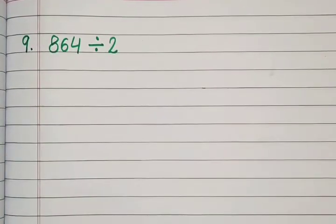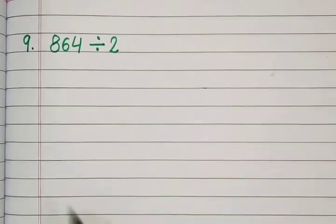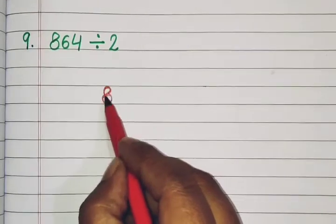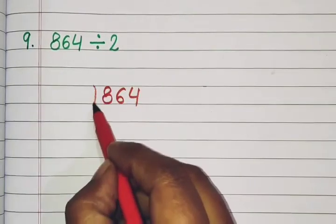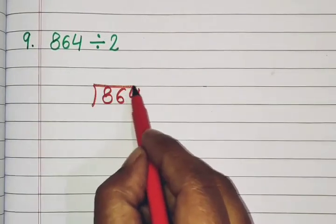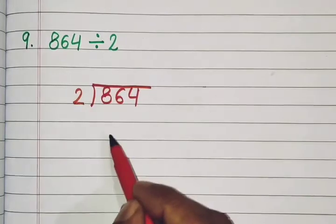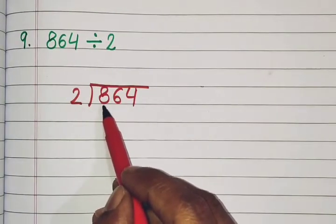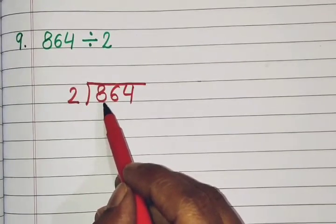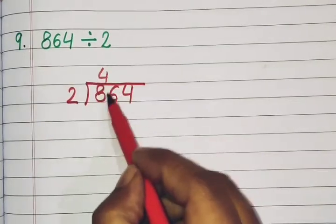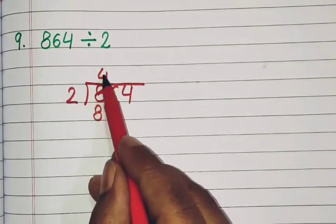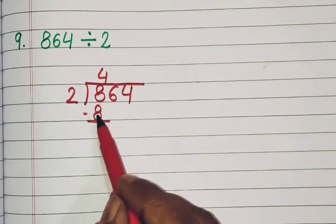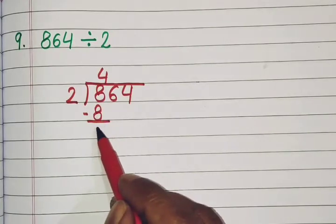Question number 9: 864 divided by 2. So what are we going to do? 864 divided by 2. In the table, 8 — how many times? 2 fours are 8. So we put 4 here, 8 here, and then minus: 8 minus 8 is 0, so we will cross.